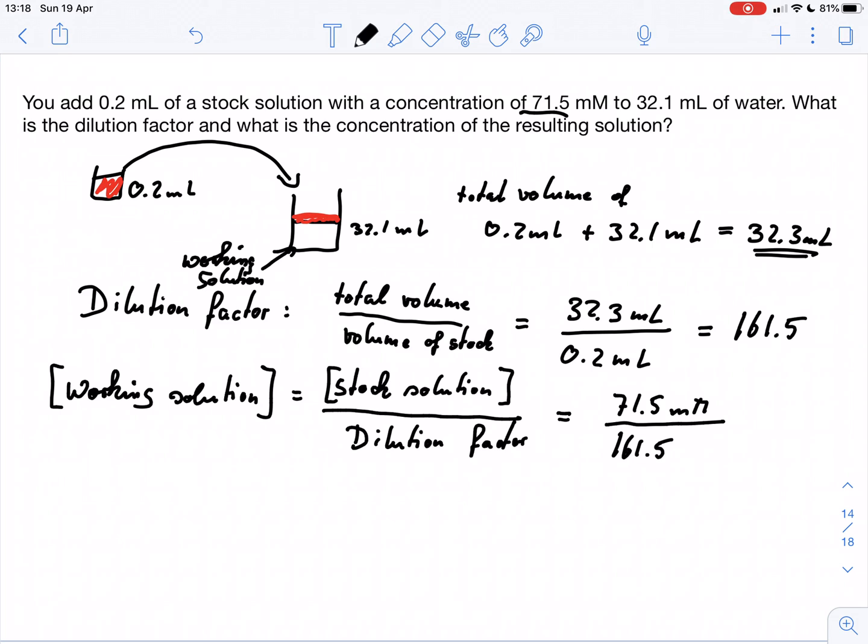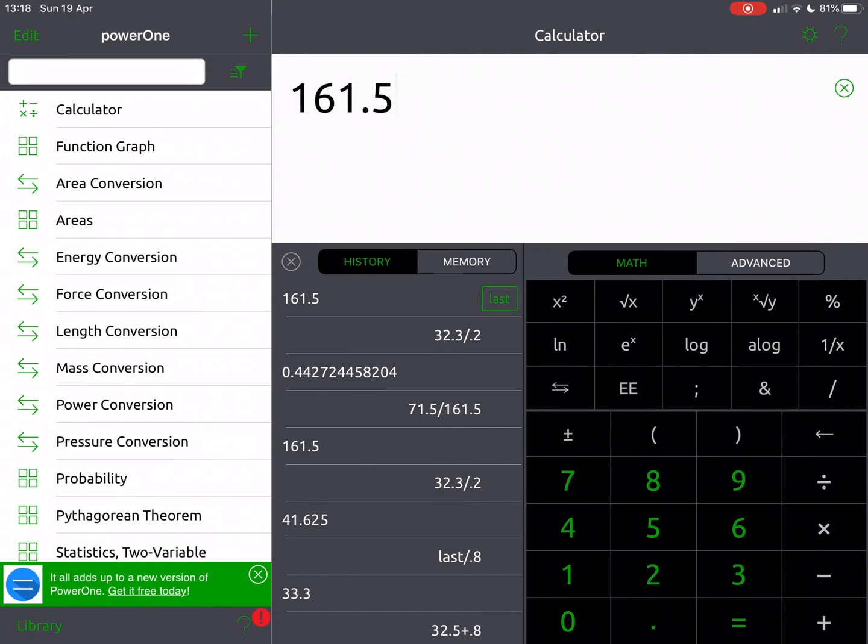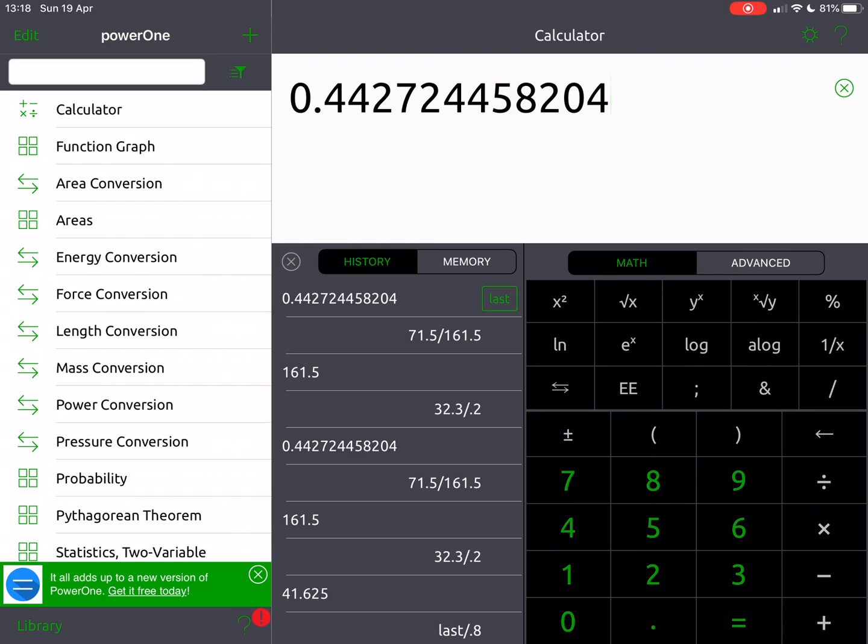So we can do very simple calculations. We have 71.5 divided by 161.5, and this gives us 0.44.